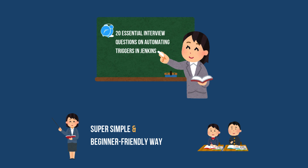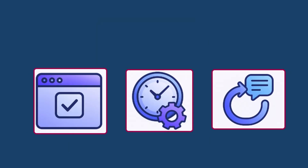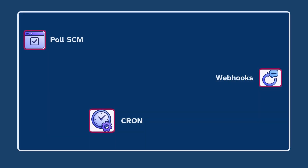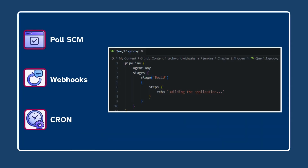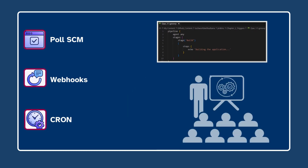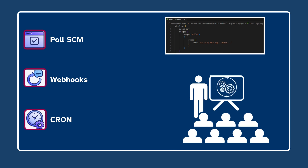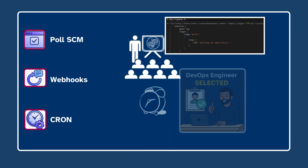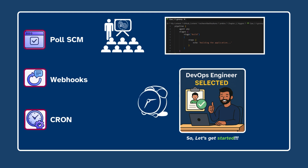Before we jump into interview questions, let's quickly break down the fundamentals so you have a strong foundation — like what is Poll SCM, Webhook, and Cron. We will also have a quick overview of the default Jenkins file syntax you need to know. Once we have got that covered, we will dive into some hands-on automation, showing you exactly how to automate with Jenkins file to trigger builds automatically in Jenkins — that will help you crack your next DevOps interview. So let's get started.